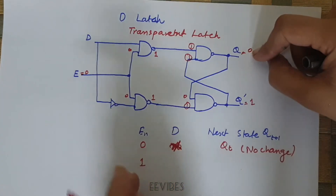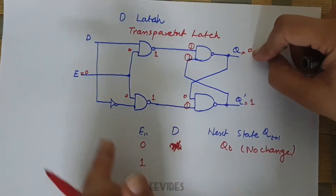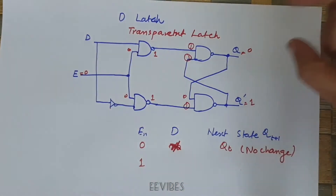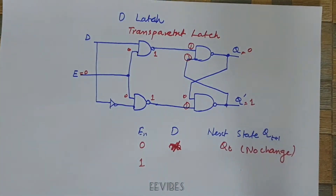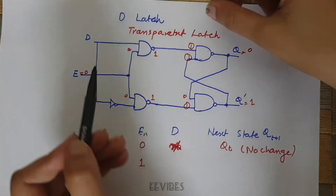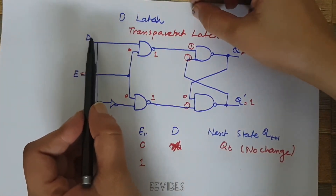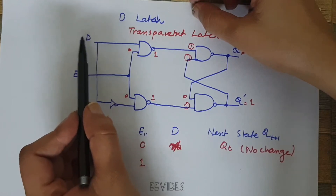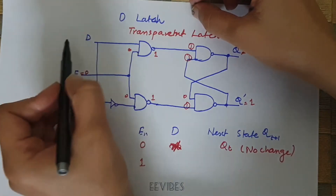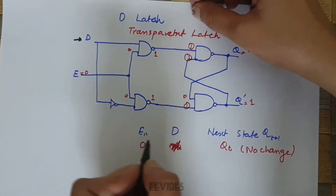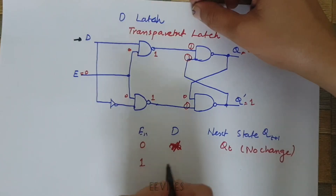When you switch enable equal to one, this activates the circuitry and any changes made by the value of D will now be introduced at the output side.